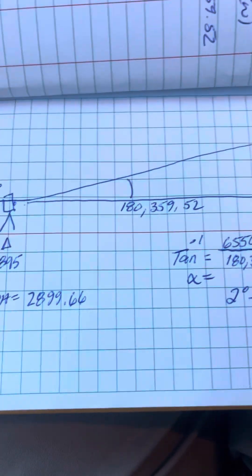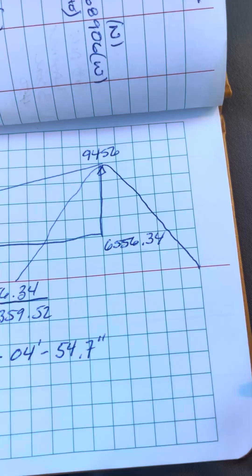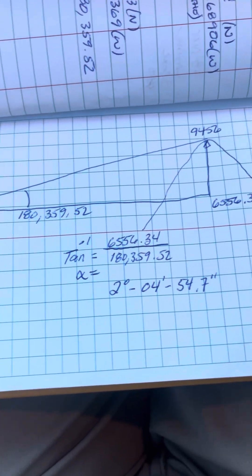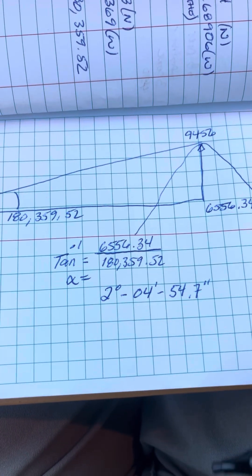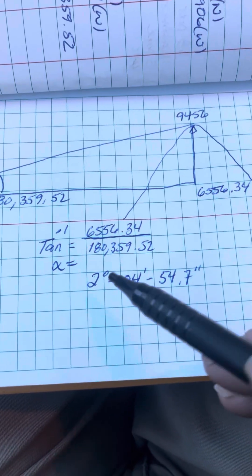So I take this here and I subtract out the total observation height which reveals this opposite side of the triangle, and then I just use basic trigonometry to find that alpha angle. I divide this into that, hit the arc tangent, and I return an angle of 2 degrees 4 minutes and 54.7 arc seconds.